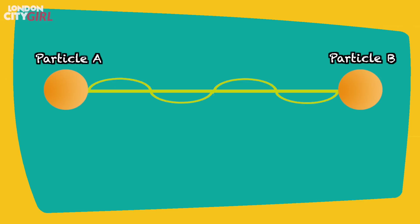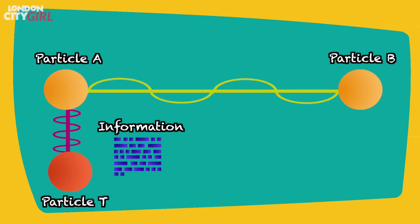Two particles are entangled and separated by a large distance. A third particle, particle T, is brought in and this is a particle that we want to teleport. Particle T interacts with particle A and we learn how the quantum state of particle T relates to particle A.